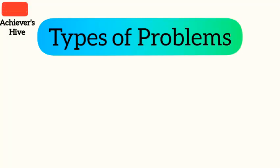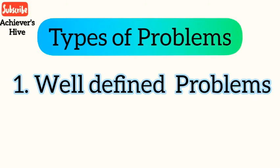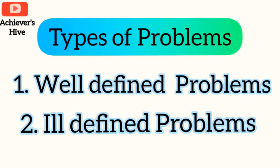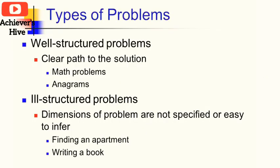There are two types of problems: well-defined problems, also called well-structured problems, and ill-defined problems, also called ill-structured problems. Well-structured problems have a clear path to the solution — we can reach the solution very easily. Examples include maths problems, anagrams, and active-to-passive voice conversion. Ill-structured problems have dimensions that are not specified.